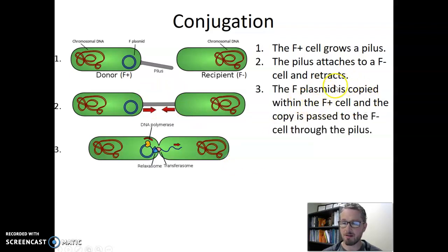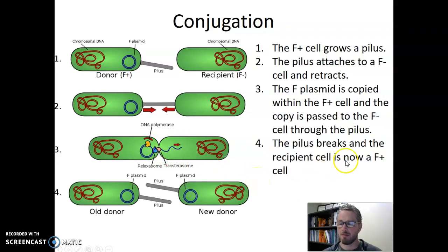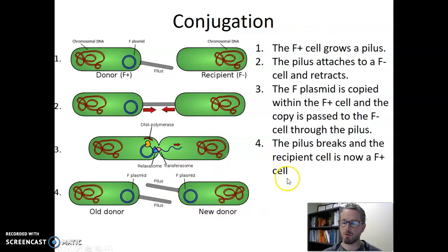Next, the F plasmid in the F plus cell is copied and a copy is sent into the F minus cell. There's DNA polymerase and extra enzymes that make that happen, but what's important is that the plasmid is being copied and a copy is being sent through to the F minus cell. Then the pilus breaks and separates the two cells. If we look at the recipient cell, it now contains an F plasmid, which makes it an F plus cell — and now it can act as a donor cell.